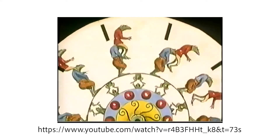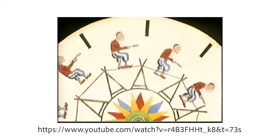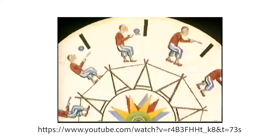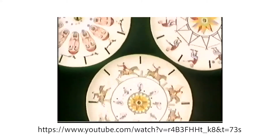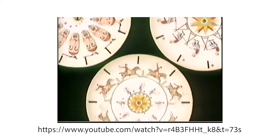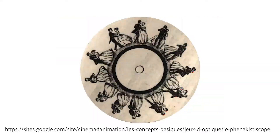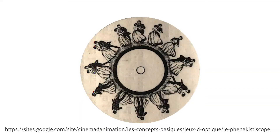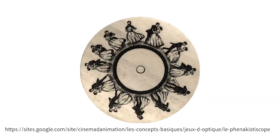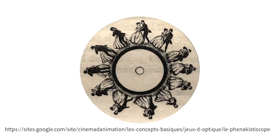Animation as an art form was born towards the beginning of the 19th century, way before the invention of the computer and even before the invention of the cinema. It started with simple devices such as the phenakistoscope, where several images are drawn on a disc and by rotating the disc fast provides the illusion of motion.